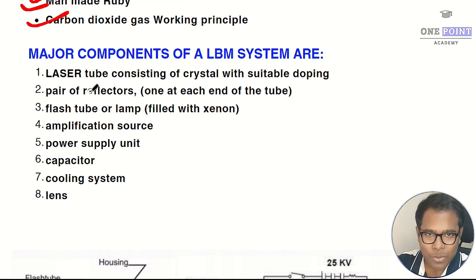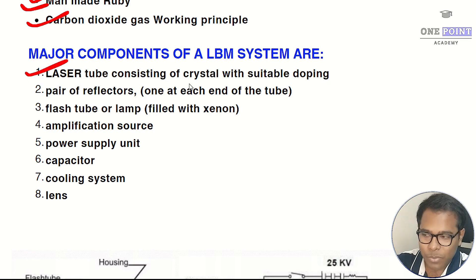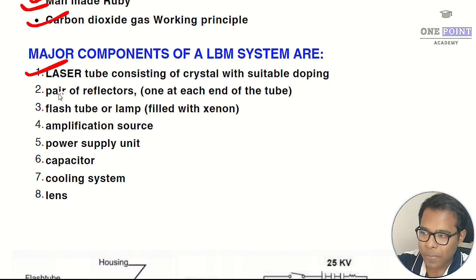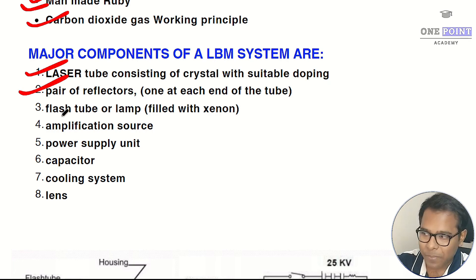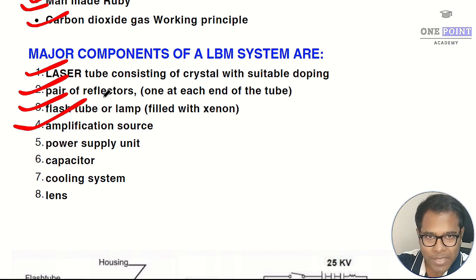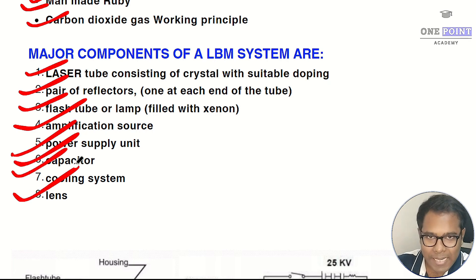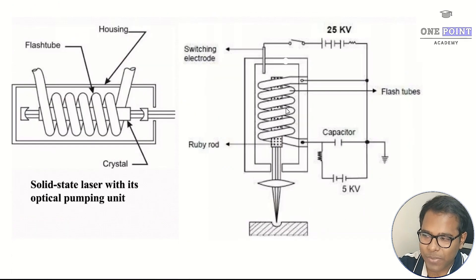Now let's look at the individual components of the laser beam machining system. There are eight components: first is the laser tube consisting of the crystal with suitable doping — the most popular being the Nd:YAG crystal placed inside a tube; second is a pair of reflectors at both ends of the tube; third is the flash tube or lamp filled with xenon or another inert gas; fourth is the amplification source; fifth is the power supply unit; sixth is the capacitor; seventh is the cooling system; and lastly the lens.